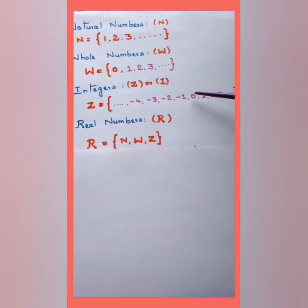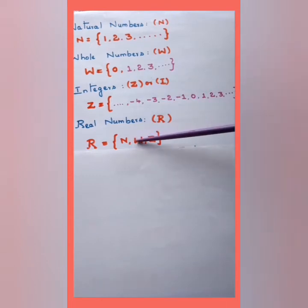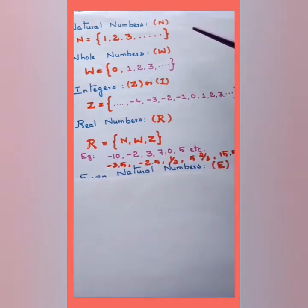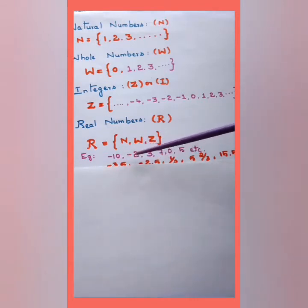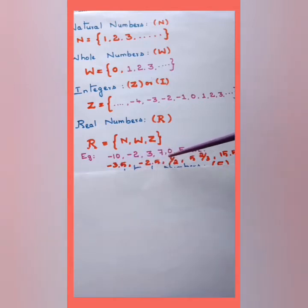Real numbers include natural numbers, whole numbers, and integers — they all form real numbers. Examples of real numbers include: -10, -2, 3, 7, 0, 5; decimals like 3.5 and -2.5; and fractions like 1/2, 5, 2/3, and 15.5. So real numbers cover a wide range.